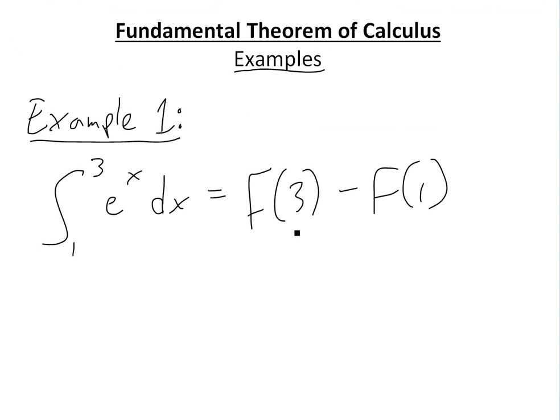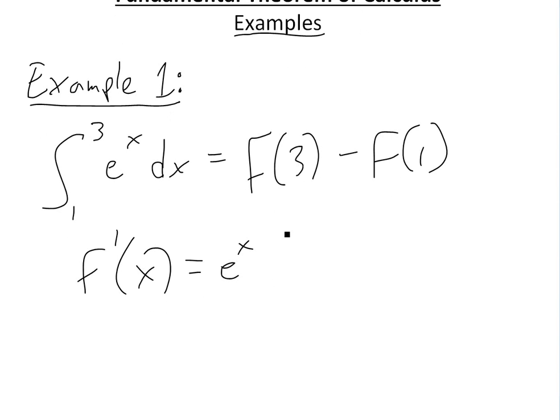Where this capital F is the antiderivative of e to the x, so F prime of x equals e to the x. The antiderivative of e to the x is just e to the x plus a constant.